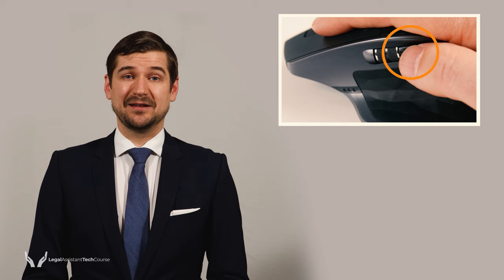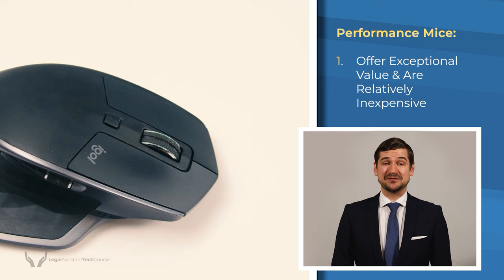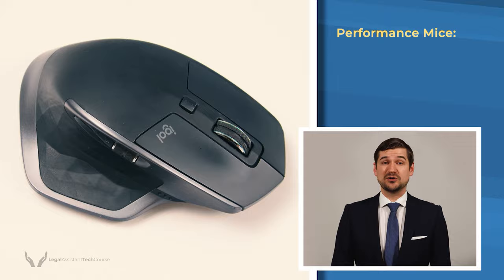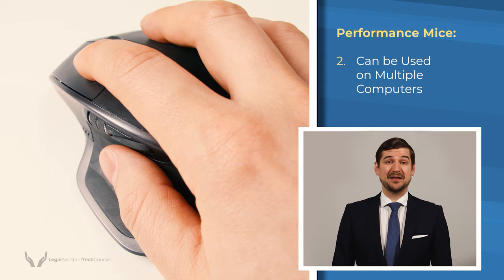My mouse also has dedicated buttons for forward and backward navigation. This is useful for navigating operating system folders or web pages and eliminates the need to drag the cursor up to the forward and back buttons. Over the course of days, weeks, months, and years, these time savings add up. Since upgrading to a performance mouse, I've saved huge amounts of time by not needing to click the forward and back buttons. The one that I use, the Logitech MX Master, cost around $100 and has been serving me well for years. It can even connect wirelessly to up to three computers.